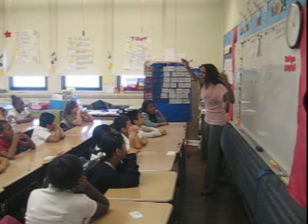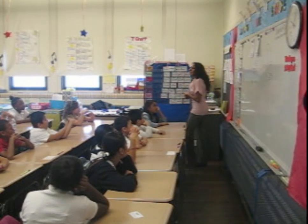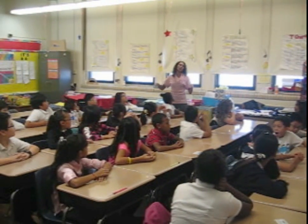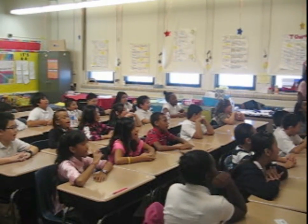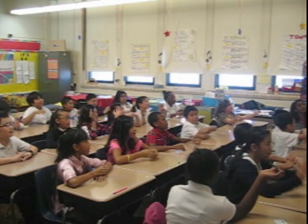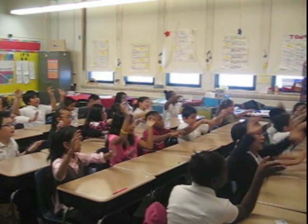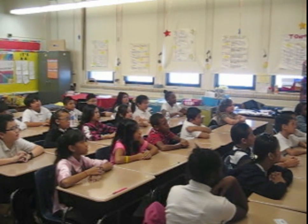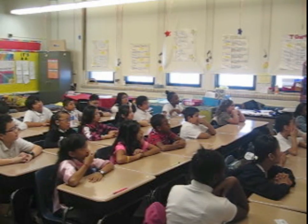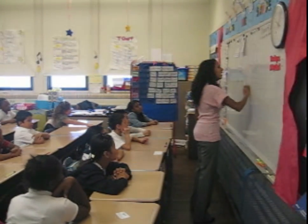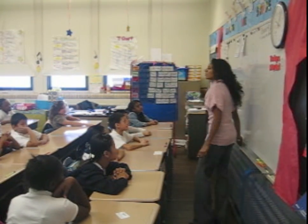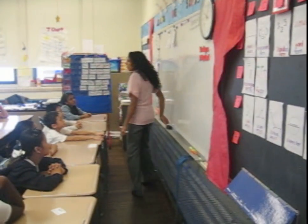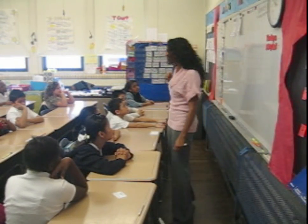Why is the number 25 a composite number? The number 25 is a composite number because it has more than two factors. It has three factors: 1, 5, and 25. And yes, three is more than two. Teach your neighbor why the number 25 is a composite number.